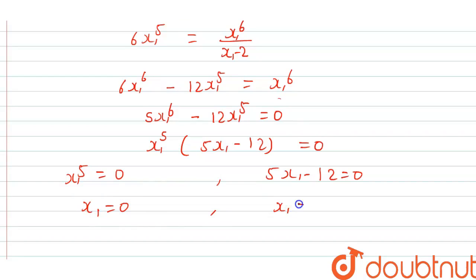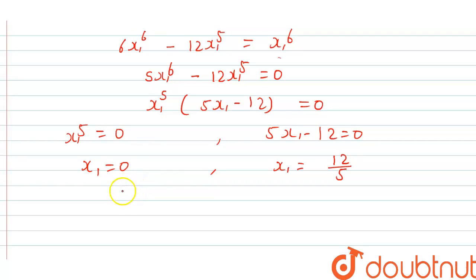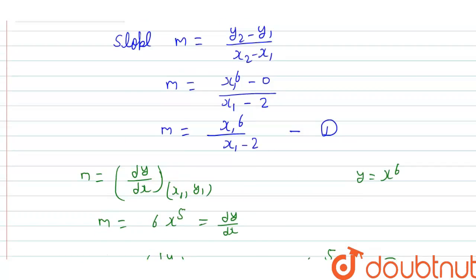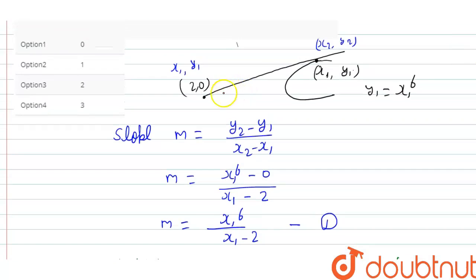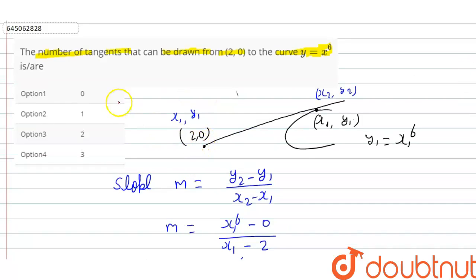From here we are getting 2 values for x1, which means 2 slopes. Since we get 2 slopes, we can draw 2 tangents from the point (2, 0). So the answer is option 3, which is 2. That is our final answer.